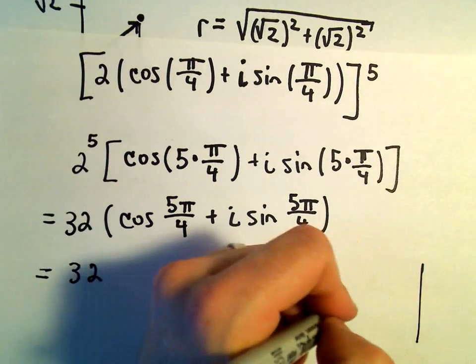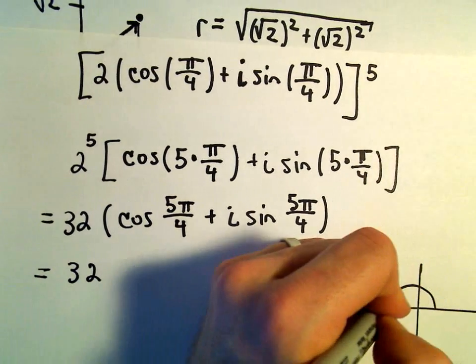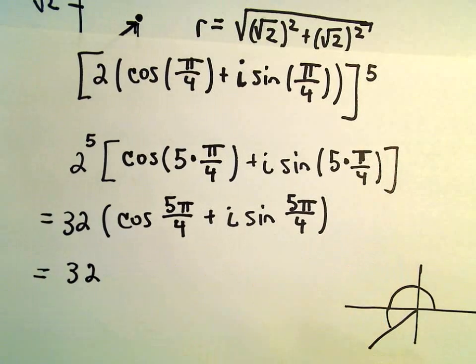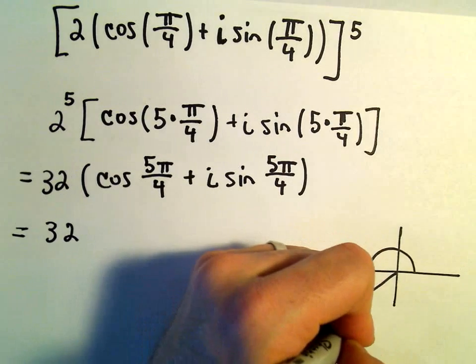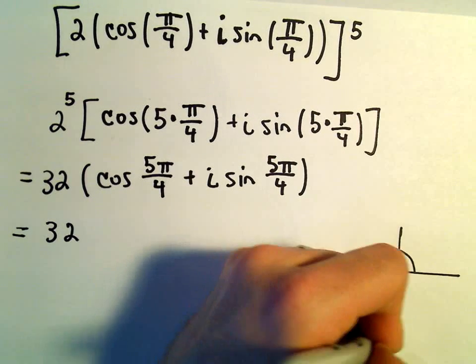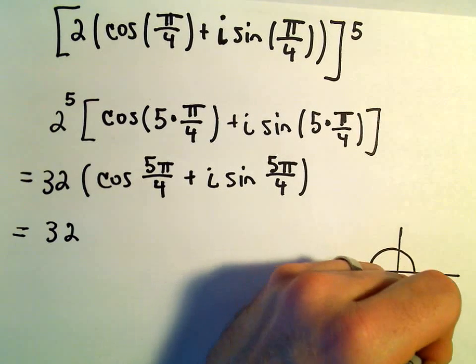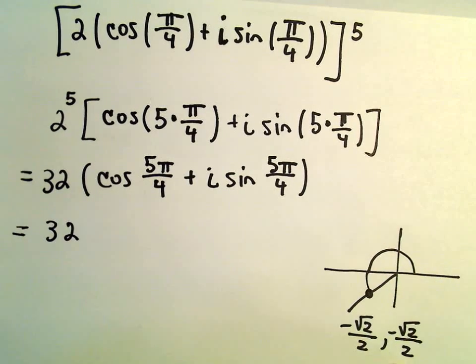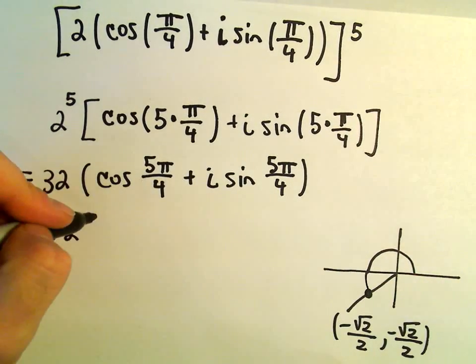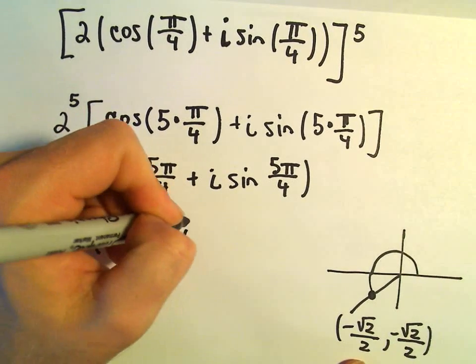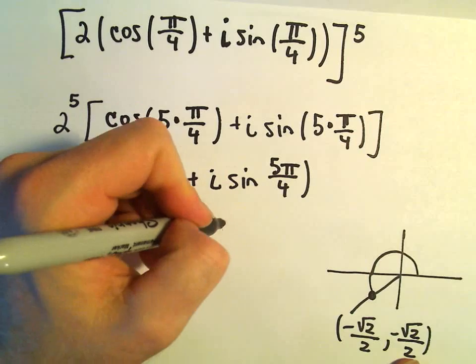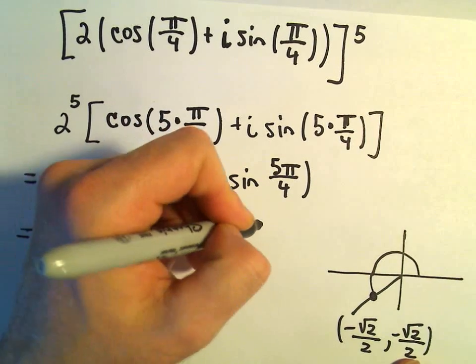So let's see. Cosine of 5π/4. 4π/4 would just be π. 5π/4 would put us down into quadrant 3. At that point, we get negative √2/2 and negative √2/2 for both cosine and sine. So cosine will be negative √2/2 plus i sine of 5π/4, which again will be negative √2/2.